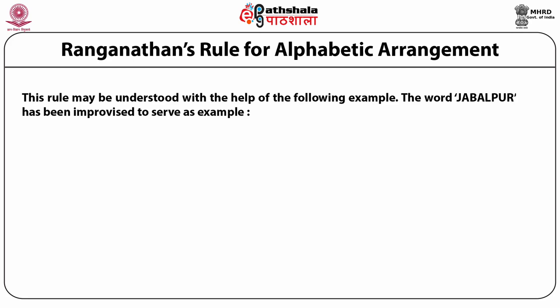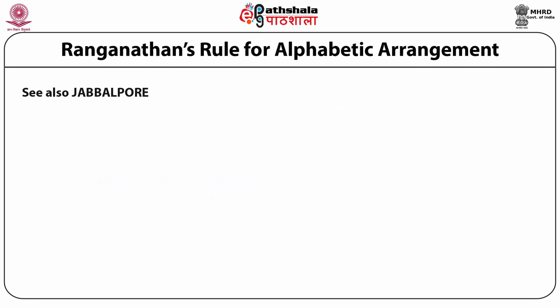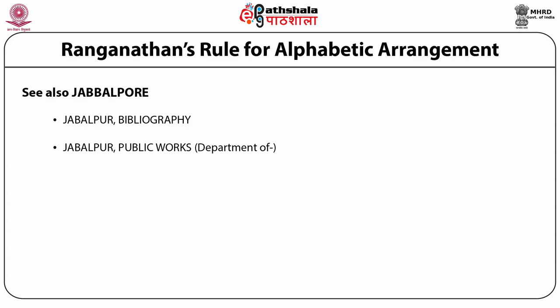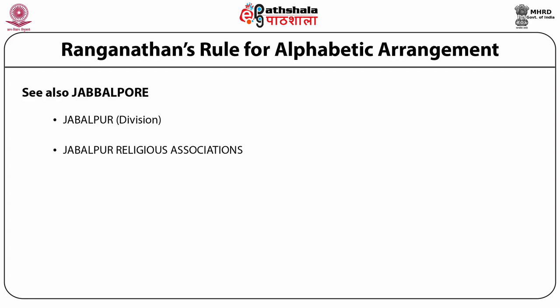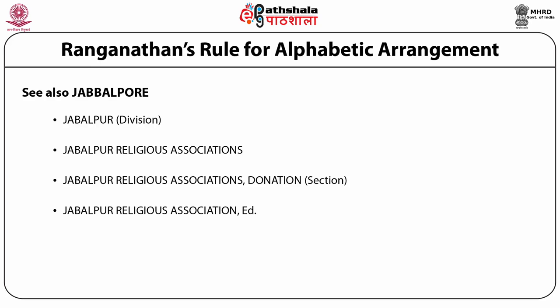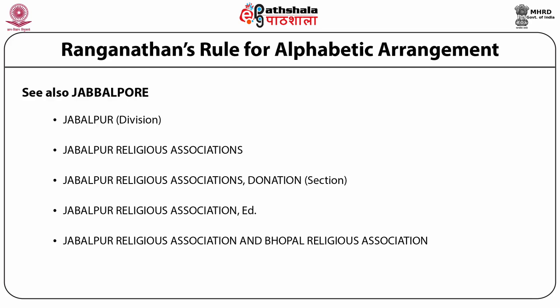Rule EH70 may be understood with the help of the following example using the word Jabalpur: Jabalpur Leper Association; Jabalpur — See also Jabalpur; Jabalpur, Bibliography; Jabalpur 1; Jabalpur 2; Jabalpur 3; Jabalpur City; Jabalpur District; Jabalpur Division; Jabalpur Religious Associations; Jabalpur Religious Associations, Donation Section; Jabalpur Religious Association, ed.; Jabalpur Religious Association and Bhopal Religious Association; Jabalpur with difference of spellings.